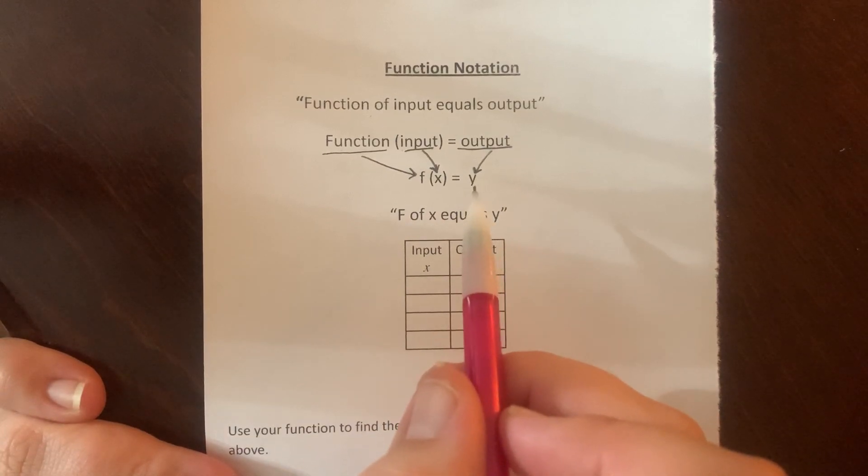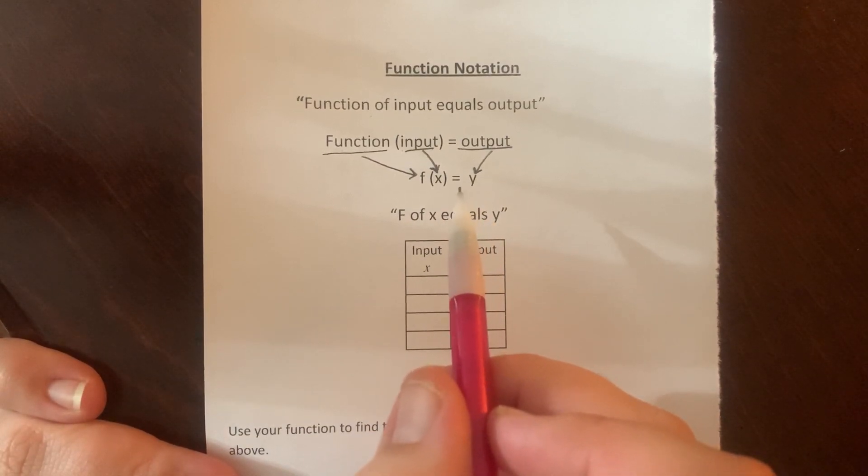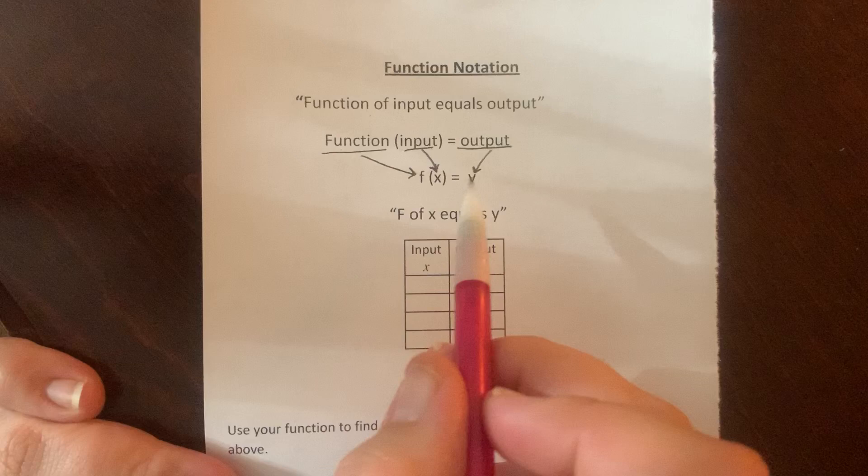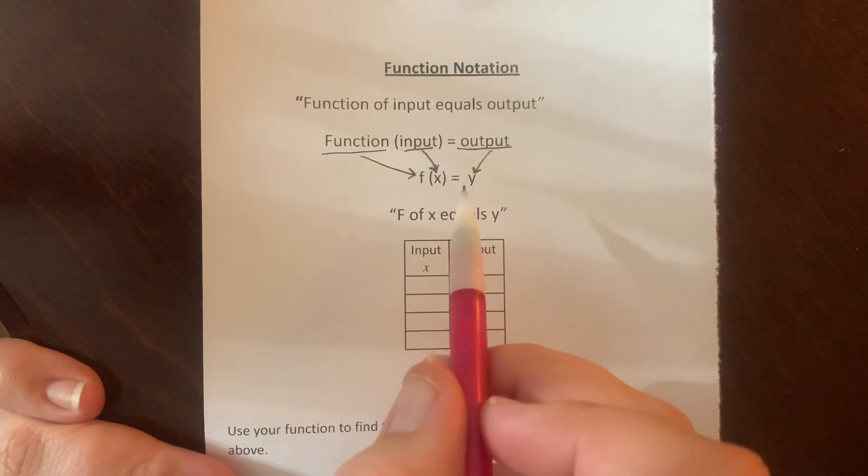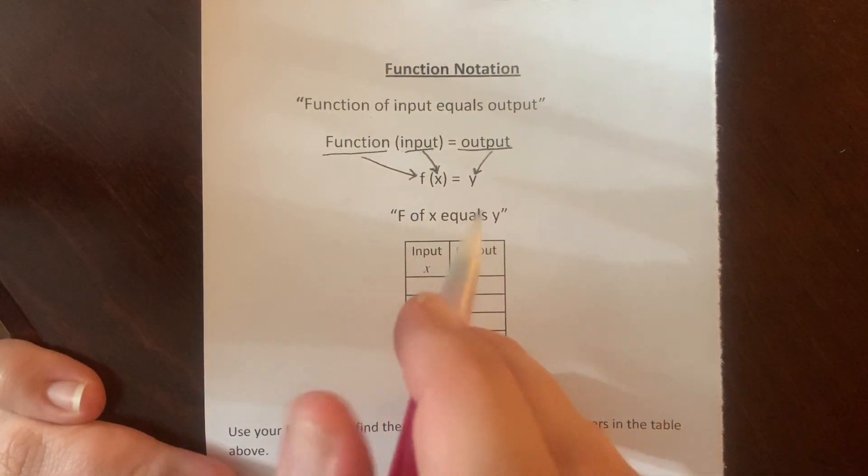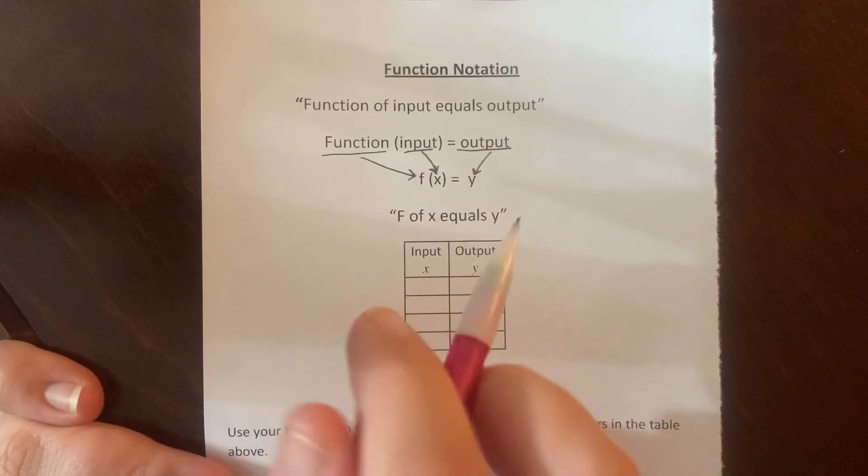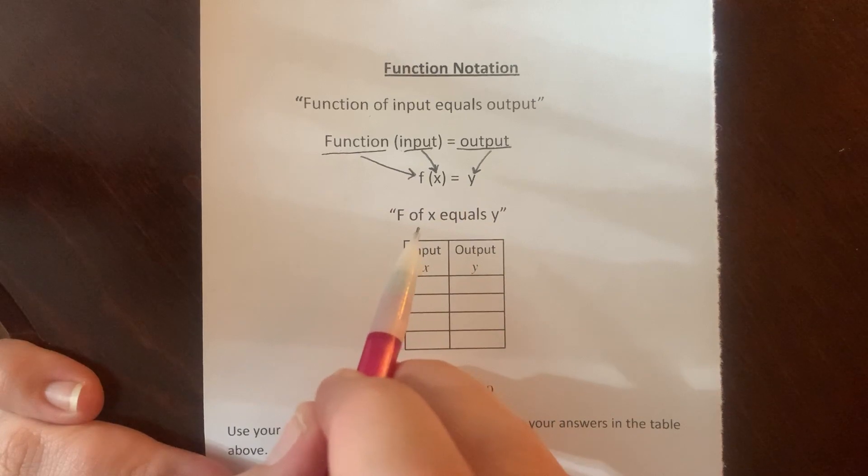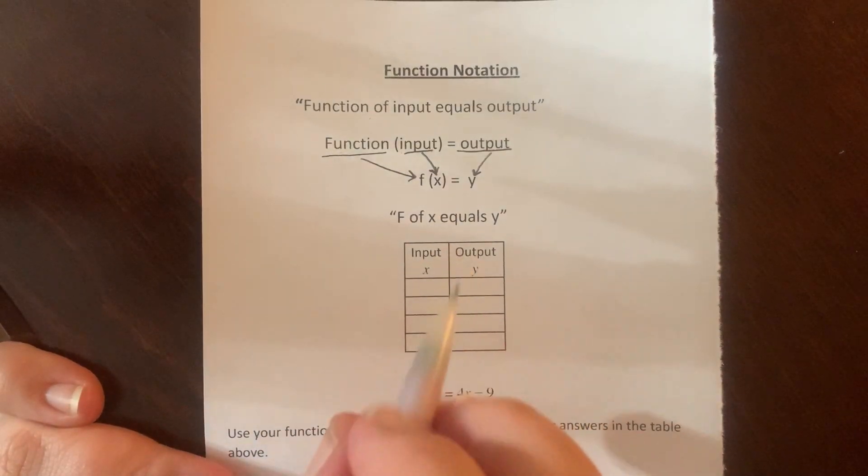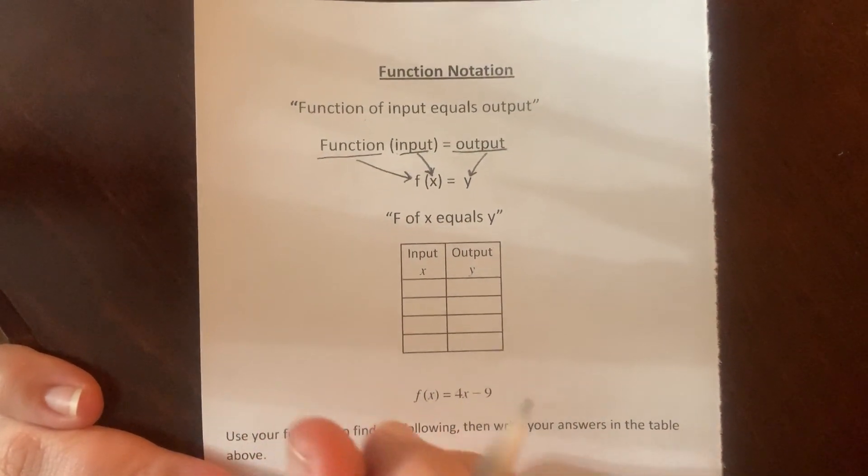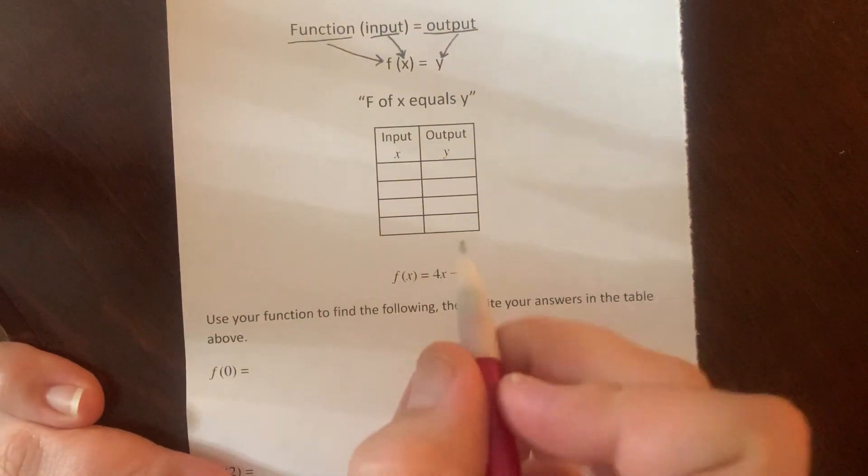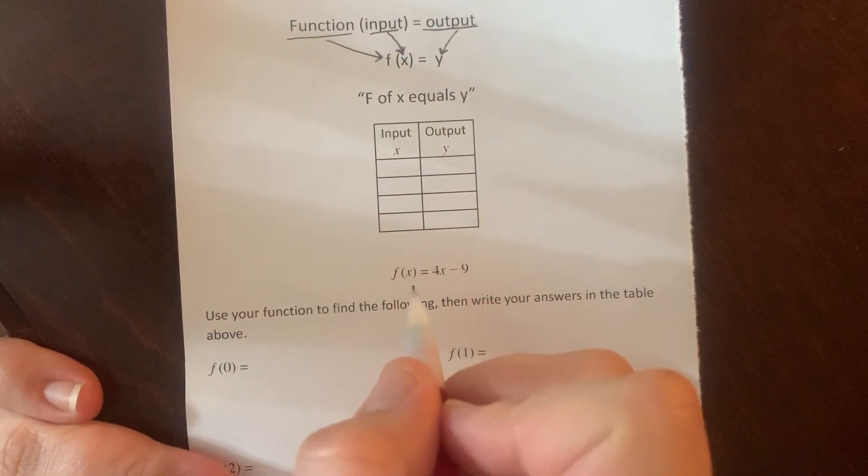This output part right now you see as a Y, but it's not always just going to be a variable. It might be just a plain number. But then again, it might also be something that represents an expression or something that represents whatever relationship the X and the Y, the input and the output have with each other. So if I jump down here to underneath the table, we'll see this function notation in action.